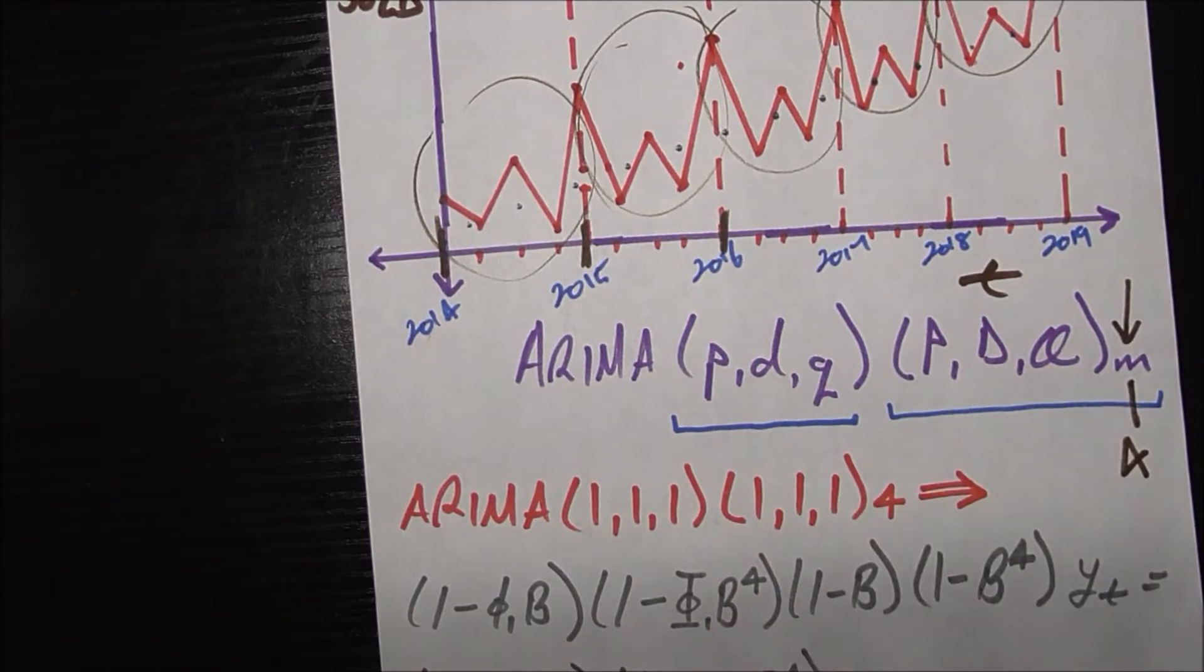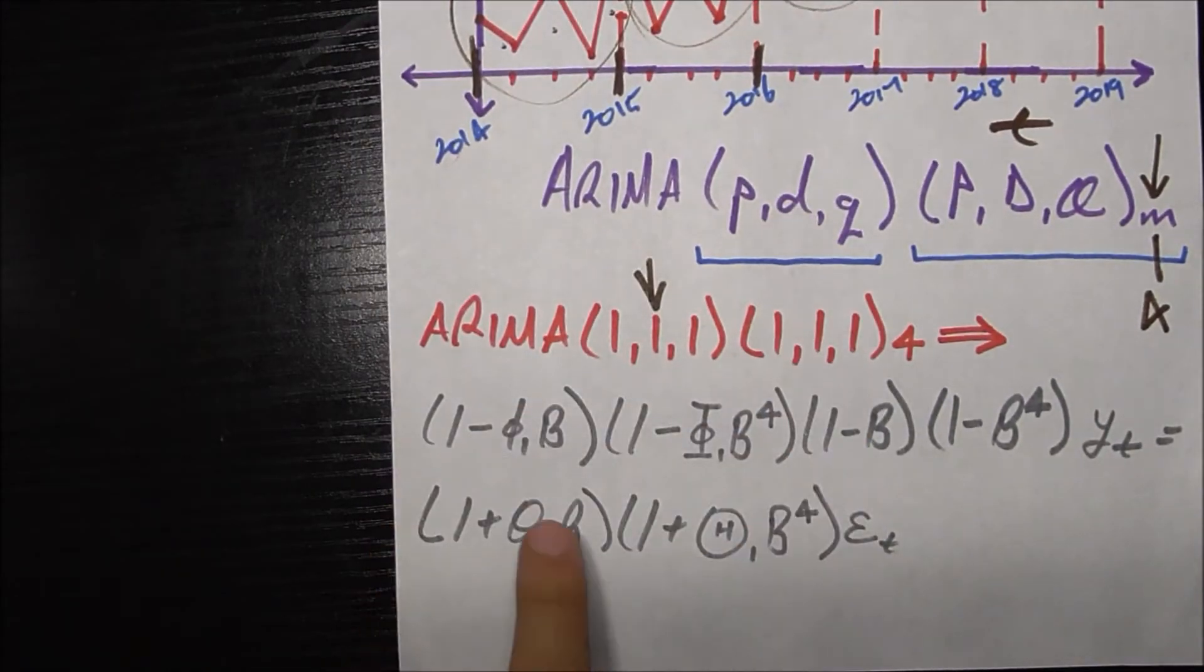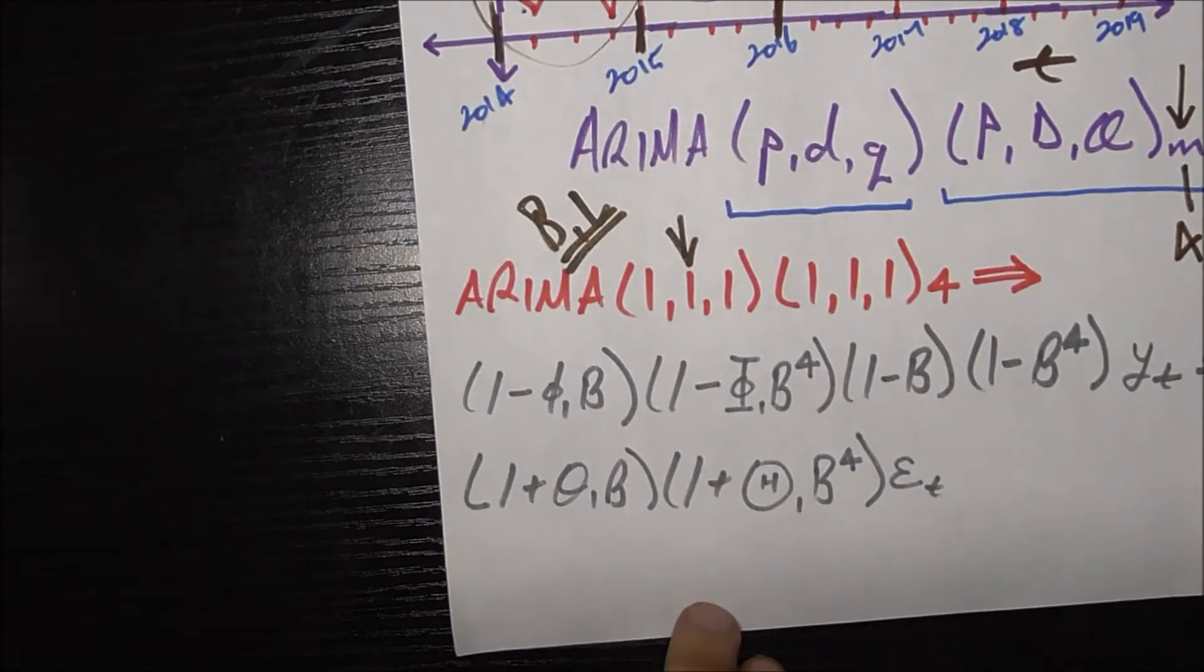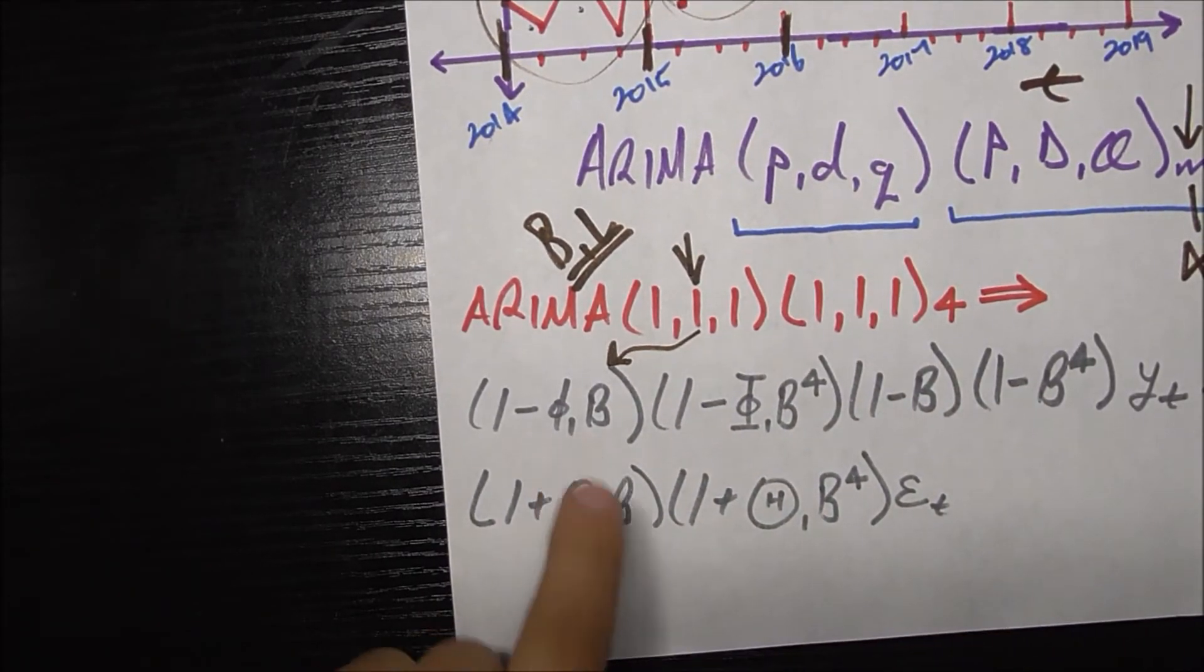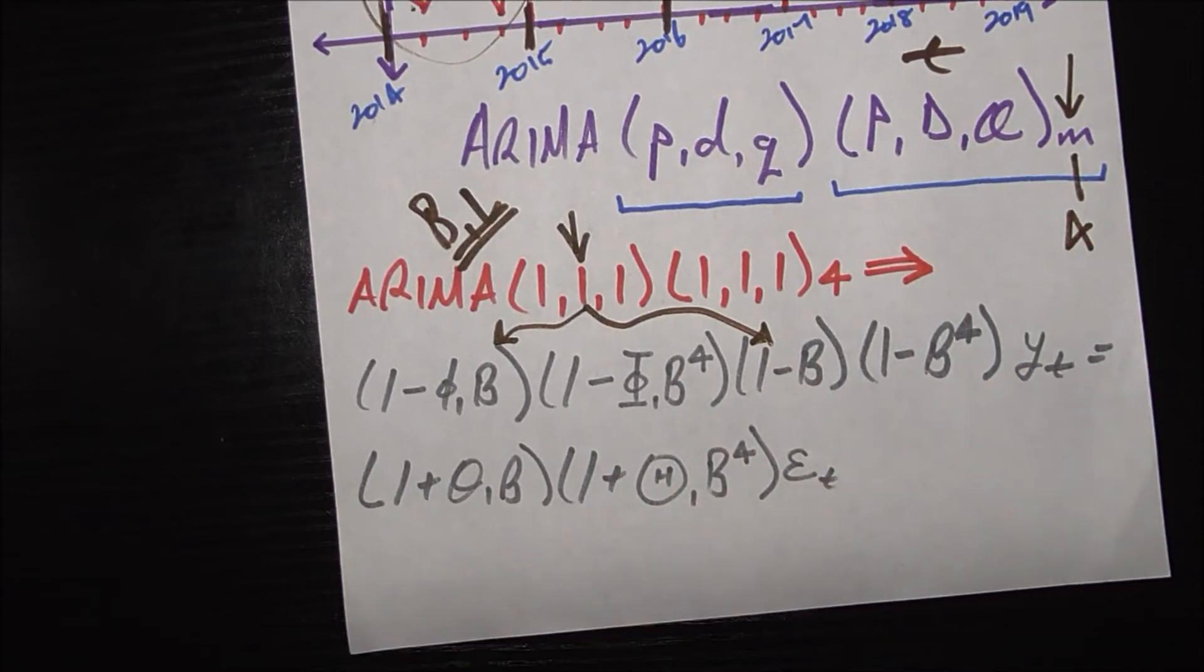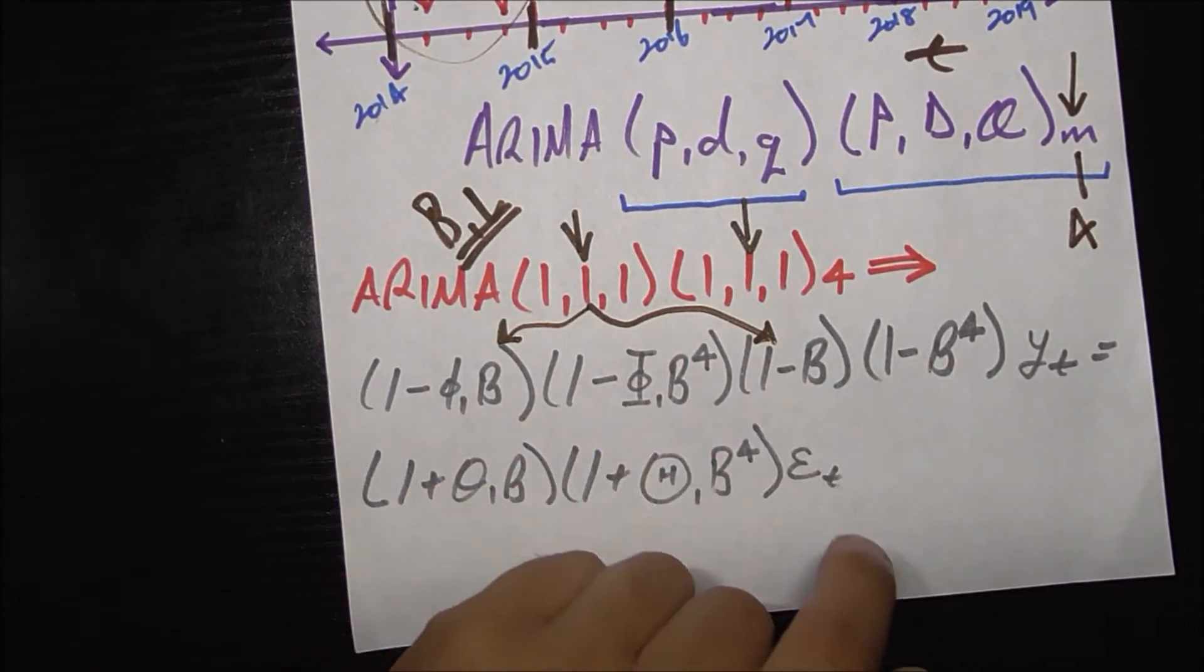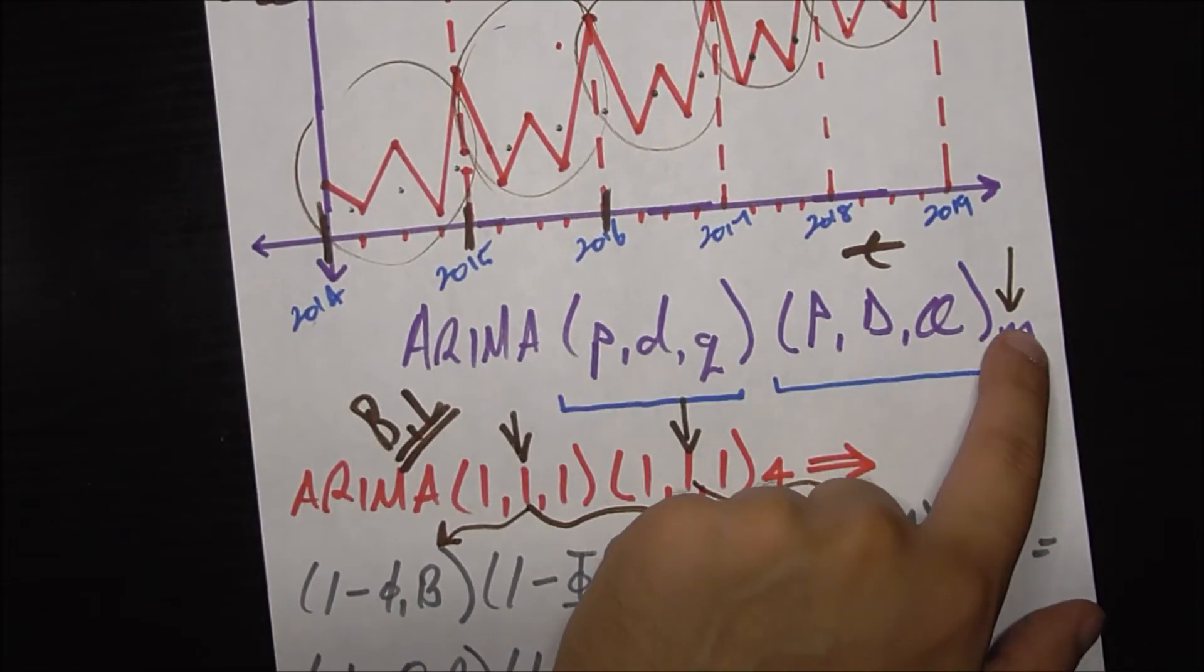This is saying that I want to integrate my model or take the first difference of my model, which is that d right here, and that corresponds to using the backshift operator, the B operator, same thing as L if you remember our lag operator video. So that one corresponds to this piece right here, which is saying backshift my whole time series by one period, so Y sub t to Y sub t minus 1. Now this one, the capital D, says backshift my entire time series also by four time periods. Why four? Because that's m.